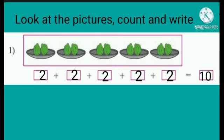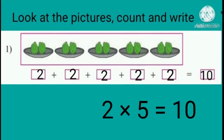Now here children, look at the pictures, count and write. How many dishes are there? Yes, five. And how many gavahs in each dish? Yes, two. So two plus two plus two plus two plus two is equal to ten. Here we are repeatedly adding two five times.